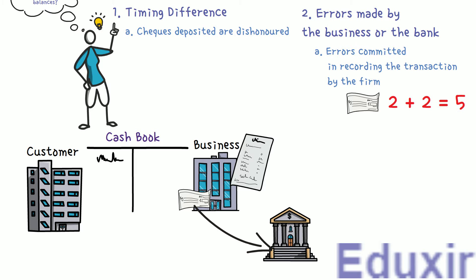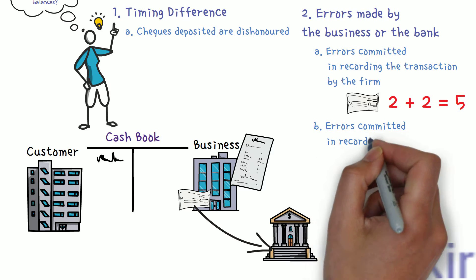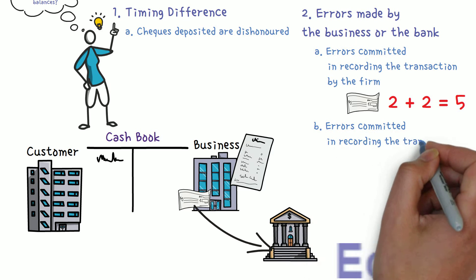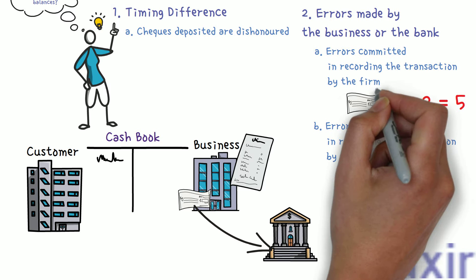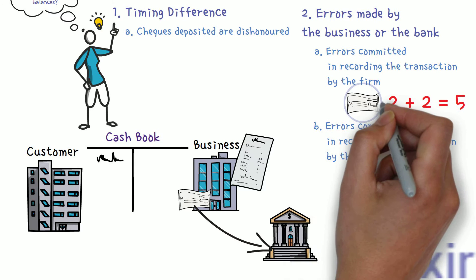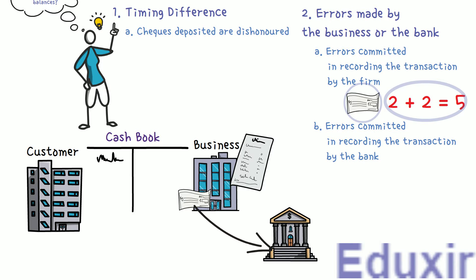This will cause a difference between the cashbook balance and the passbook balances. Errors committed in recording the transactions by the bank are also due to omission or wrong recording of transactions related to cheques issued, cheques deposited, and wrong totalling, committed by the bank while recording the entries in the passbook. This will cause a difference between the cashbook balance and the passbook balances.